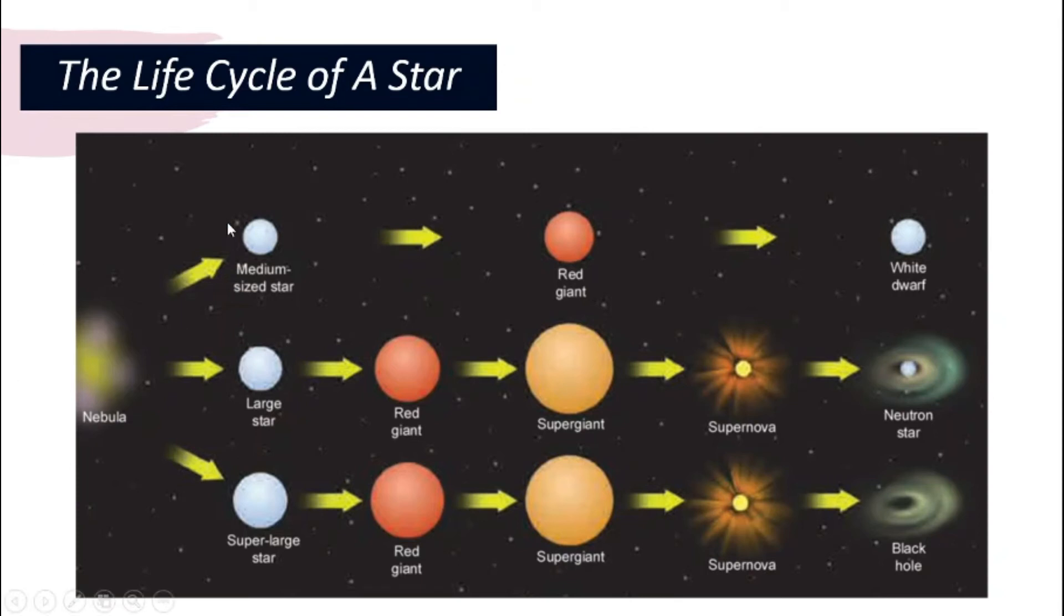If it is a medium star, what happens next as it continues to expand and the hydrogen is used up is that it will start to form a red giant. And after red giant, there is no explosion, it just starts to turn into a white dwarf.